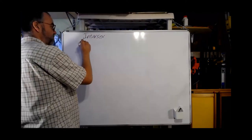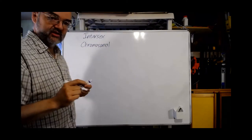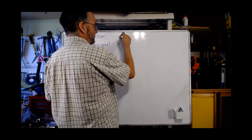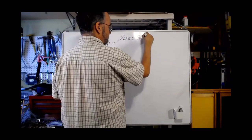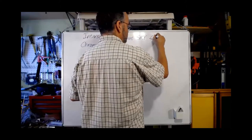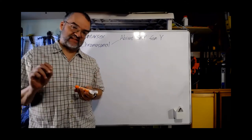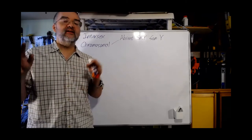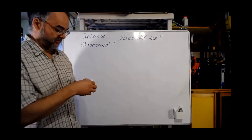Let's start with chromosomal conditions. In some cases, what you get is an absent SRY — you have a Y chromosome that lacks the SRY gene. Because of the absence of SRY, the individual is XY but the gonads do not develop into testes. However, because of that particular arrangement they also don't develop into ovaries the way you'd normally expect, and you end up with something called Swyer syndrome.